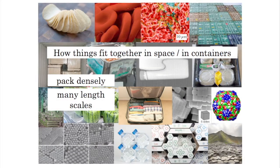There are two important things I would like you to notice. One is that there are many length scales. Down here I'm showing an image from nanomaterials — nanoparticles that pack together to form these structures. Up here on the microscales we have red blood cells, viral capsids, and then on the bigger scales we have oranges and containers and bottles. Also this is the interior of an iPhone. So these are all different scales.